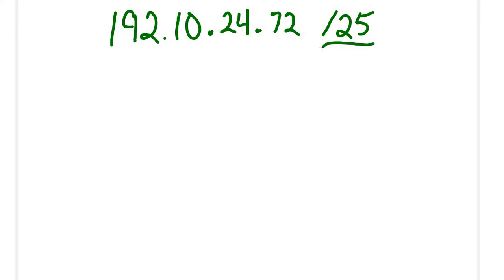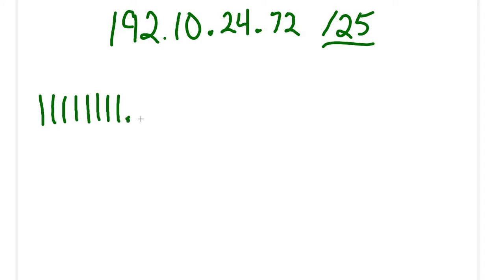The first step is I need to take this slash 25 and put it into its binary form, which means I needed to have 25 ones, followed by enough zeros to fill it out to 32. Let's start that process. We're going to count bit number 1, 2, 3, 4, 5, 6, 7, 8, 9, 10, 11, 12, 13, 14, 15, 16 — second octet's done.